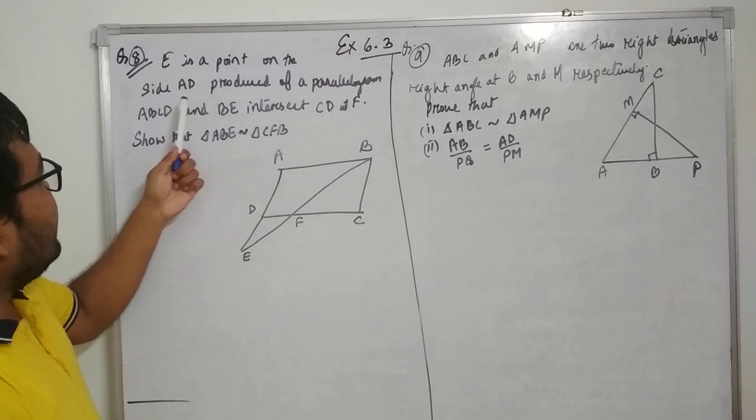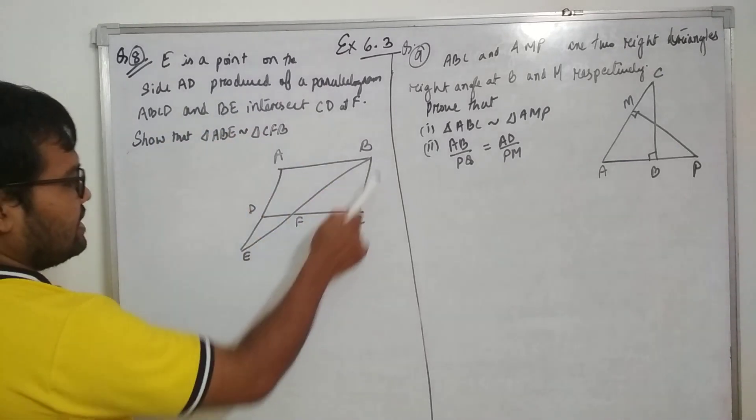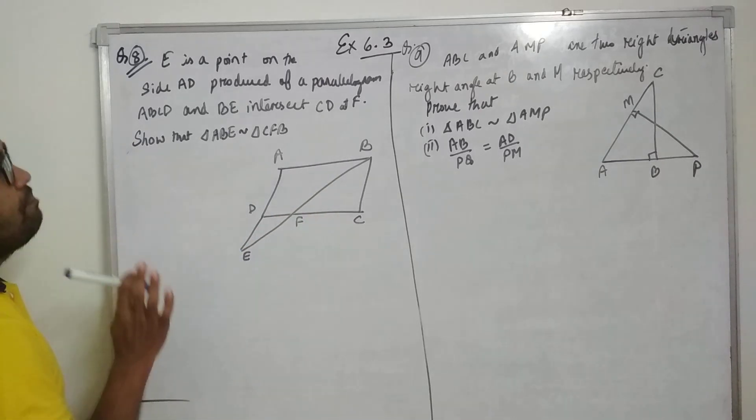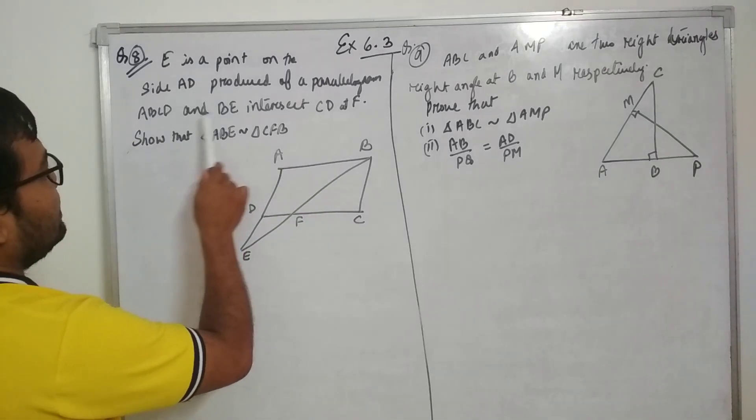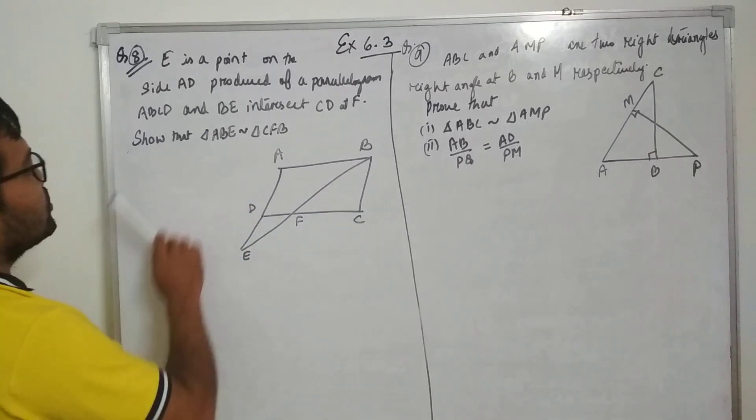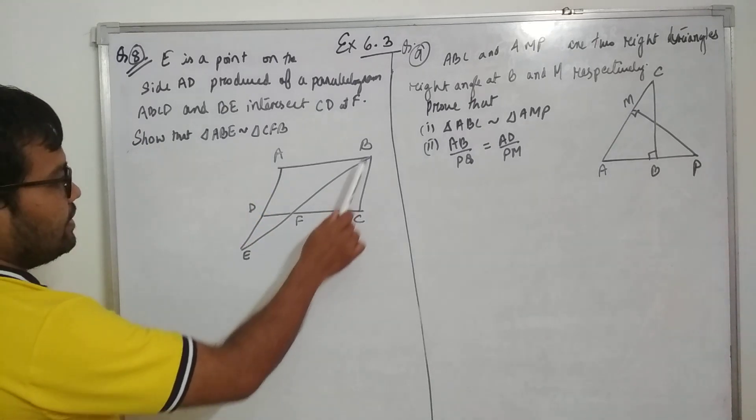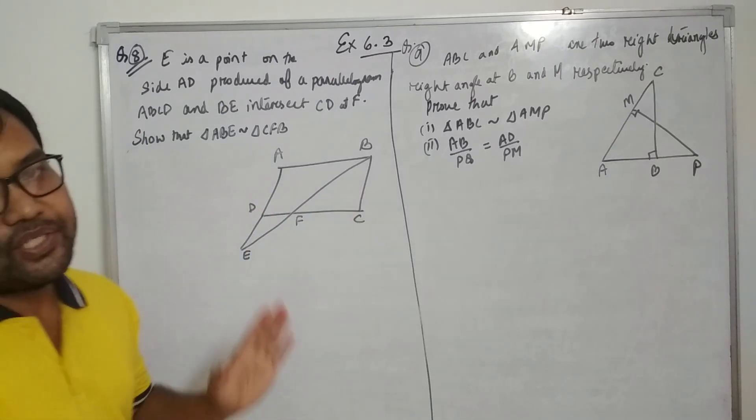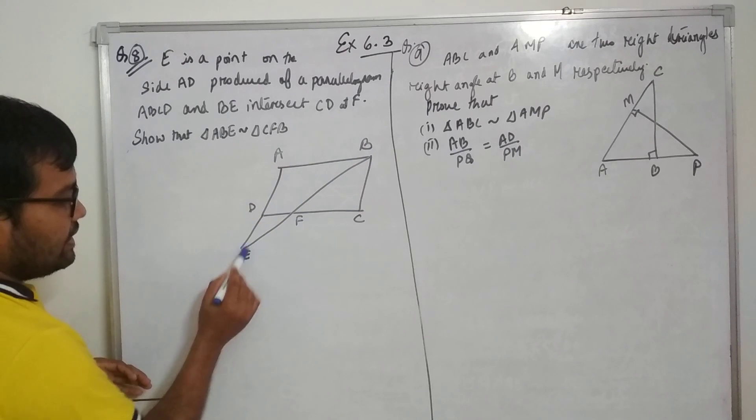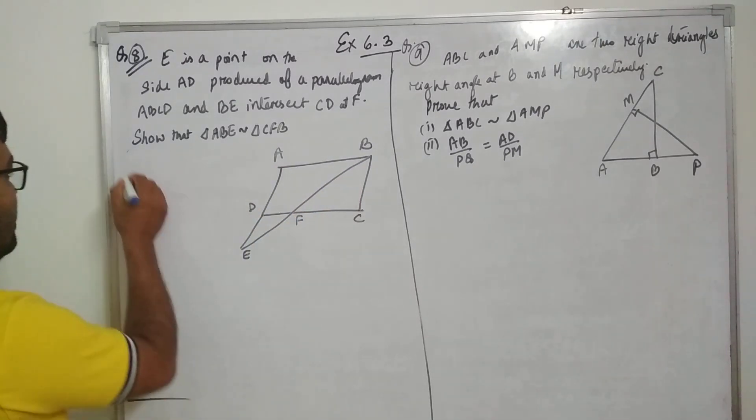E is a point on the side AB produced of a parallelogram ABCD and BE intersects CD at F. Show that triangle ABE is similar to triangle CBF. Very simple part. Triangle ABE similar to CBF. We will see one more solution.